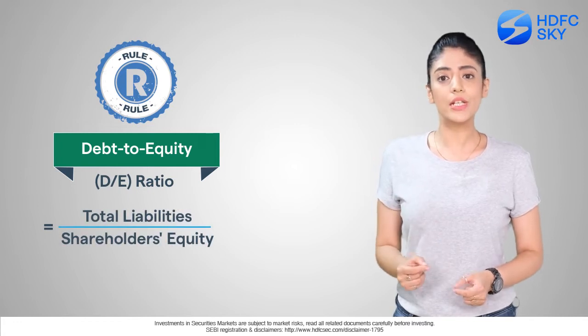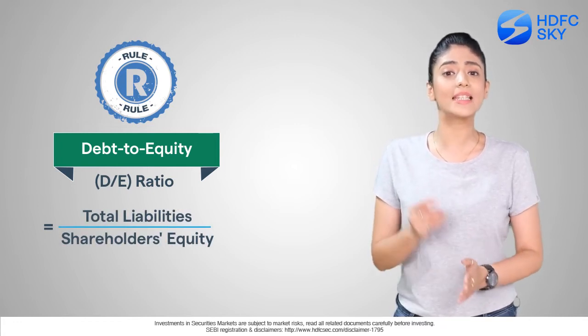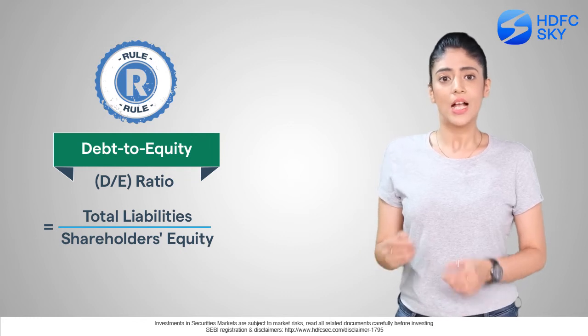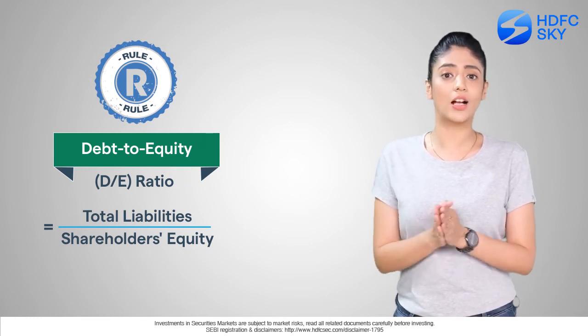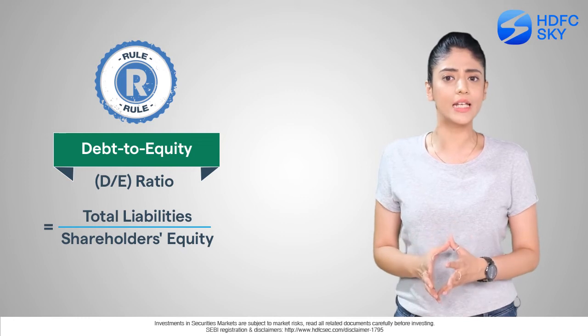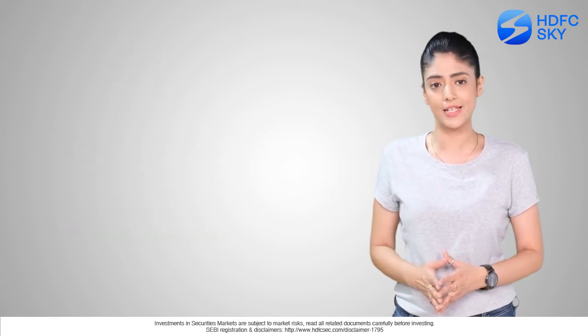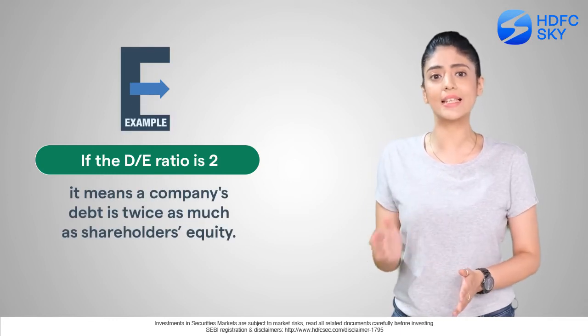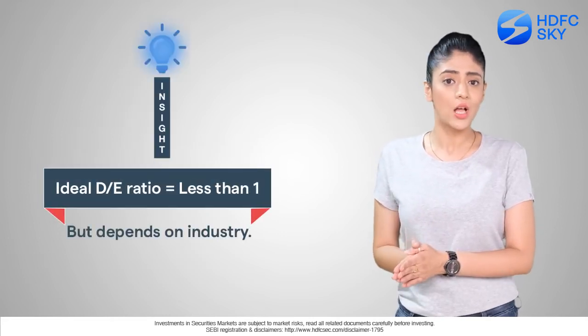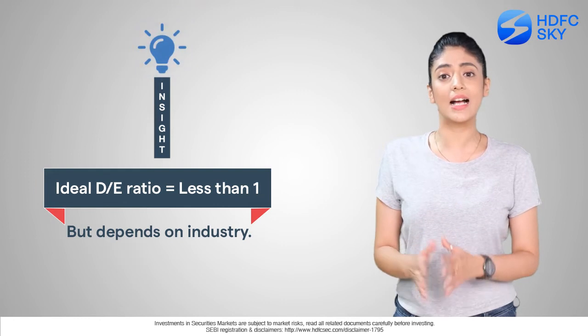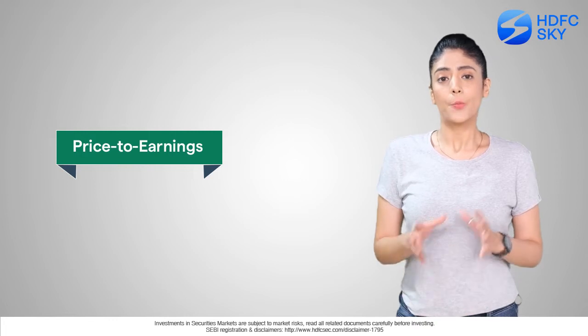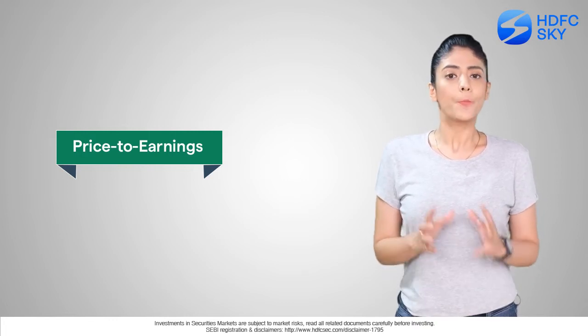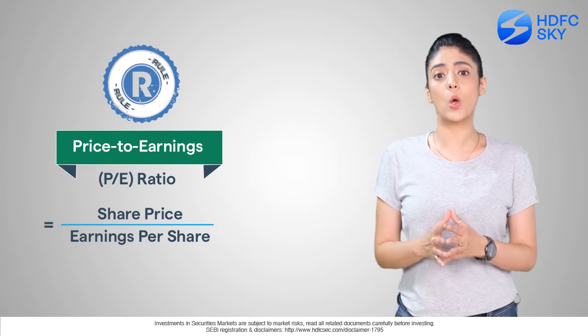Number six: Debt to Equity, yani D/E. Debt to Equity ratio measures a company's debt relative to its equity, showing how much leverage a company uses and whether shareholders' equity can cover debt liabilities. For example, a D/E ratio of 2 means the company's debt is twice its equity. Although it varies by industry, most experts consider a D/E ratio under one as healthy.